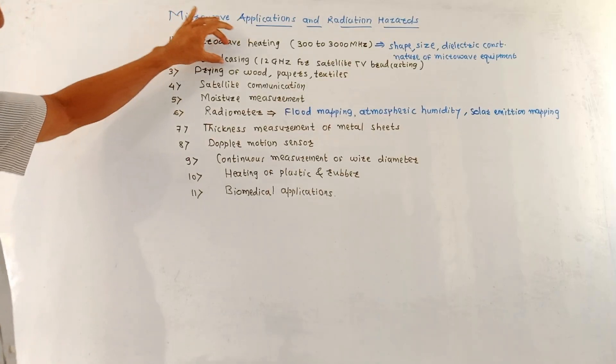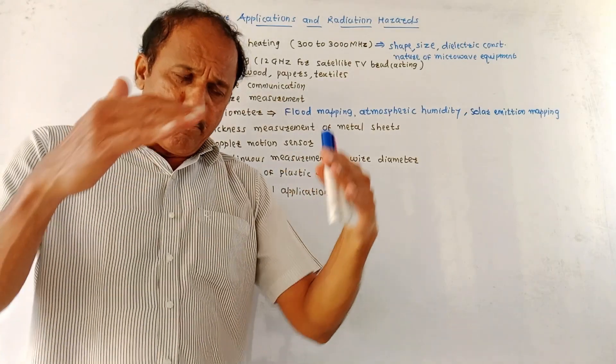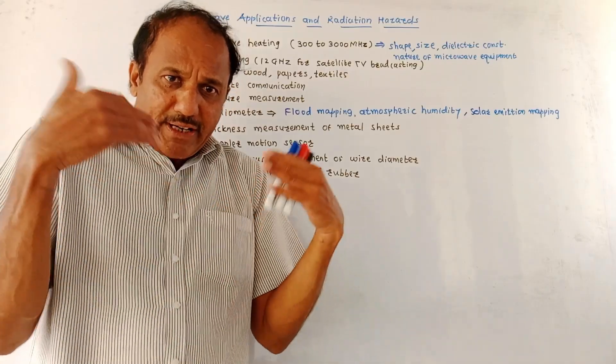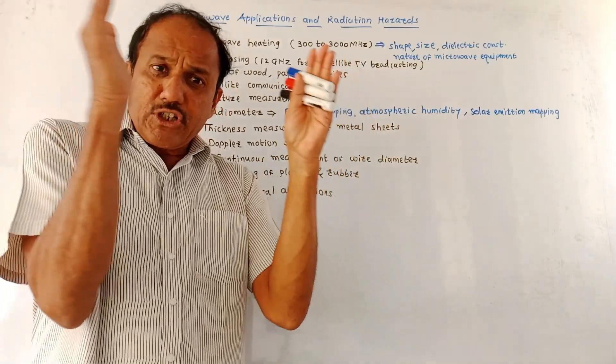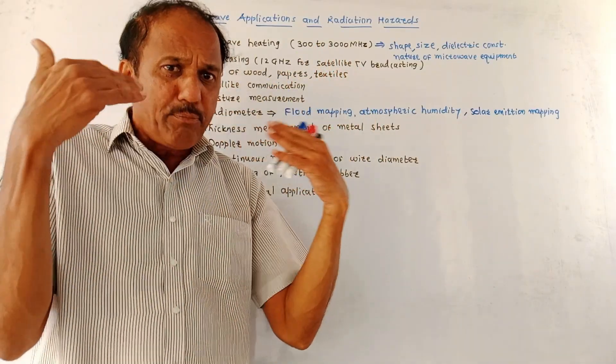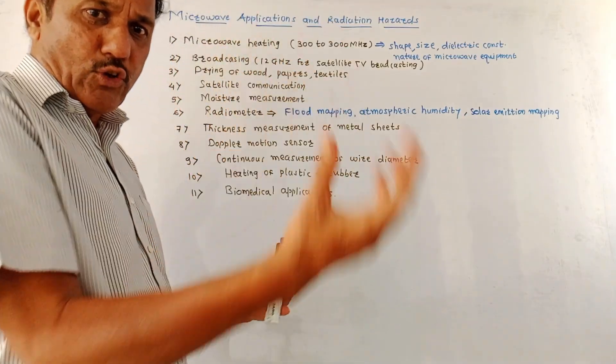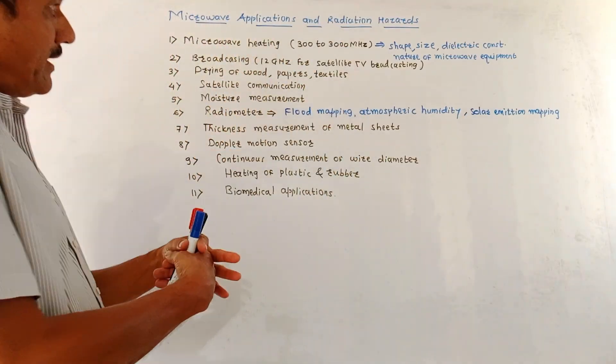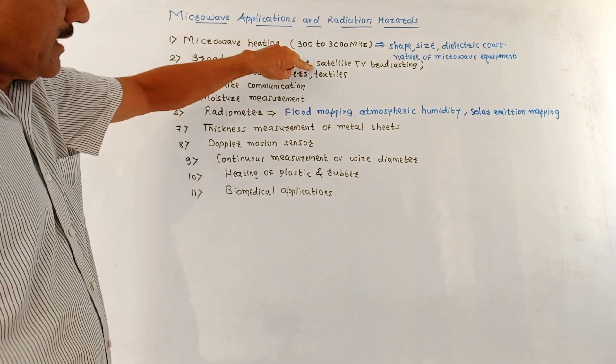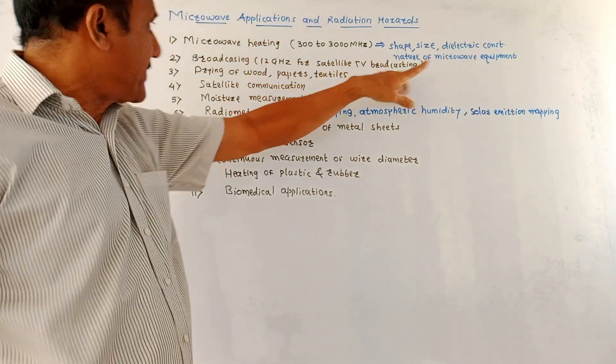Next is the application for Broadcasting. We know that below the microwave range, the frequency spectrum is very crowded nowadays, so in many broadcasting applications, this microwave range is preferred. For example, 12 GHz is used for satellite TV broadcasting.